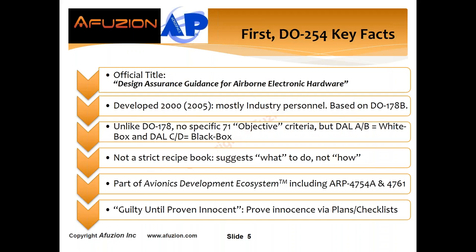Some DO254 key facts. The official title is Design Assurance Guidance for Airborne Electronic Hardware. It was developed in 2000, mostly by industry personnel, not certification authorities. It's based on DO178B, not DO178A. Unlike DO178, there are no specific 71 objective criteria. However, DAL-A and B are white box — meaning we look inside the design processes and logic. DAL-C and D in DO254 is more black box. DO254 is not a strict recipe book — it suggests what to do, but not how. It has a basic tenet of guilty until proven innocent — we need to prove our innocence via plans and checklists.